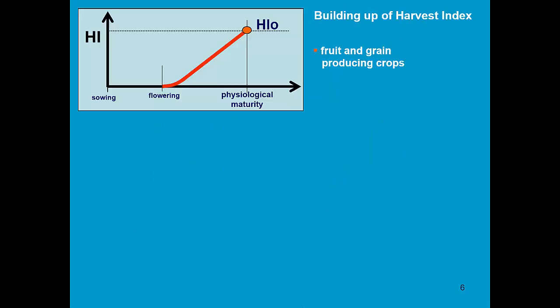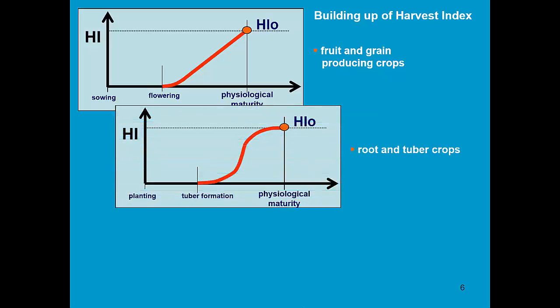The building up of the harvest index is simulated somewhat differently, depending on the type of crop. For fruit and grain producing crop, it starts from flowering, and then linear increase till physiological maturity.